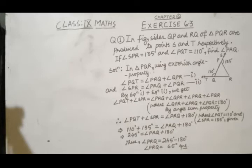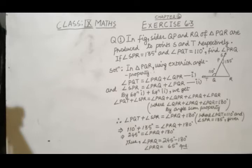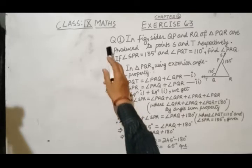Hello everyone, today we will discuss a few problems from exercise 6.3 based on angle sum property of a triangle and exterior angle property. So let's start with question number 1.